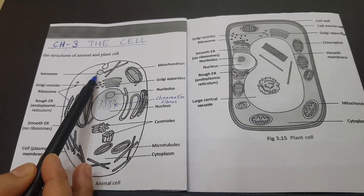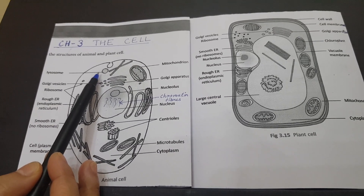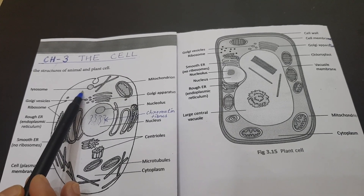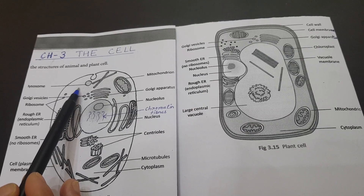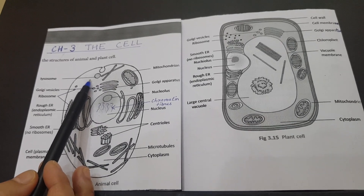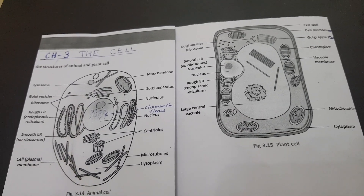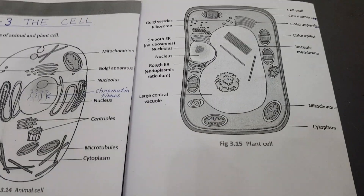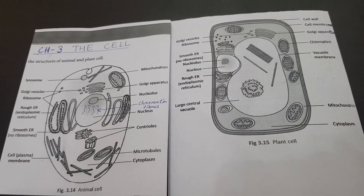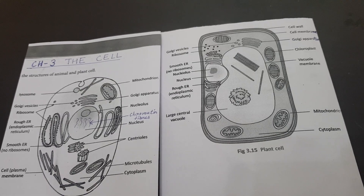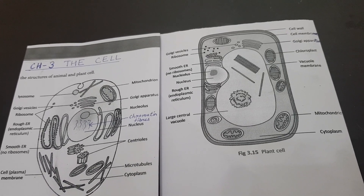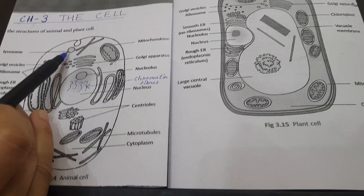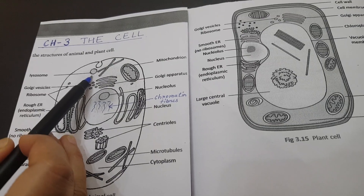The next organelle is the lysosomes. These are spherical, sac-like structures evenly distributed in the cytoplasm. They are small, surrounded by a single membrane, and contain powerful enzymes capable of digesting or breaking down all organic materials. Lysosomal enzymes are made by the rough endoplasmic reticulum. Lysosomes are called the garbage disposal system of the cell.